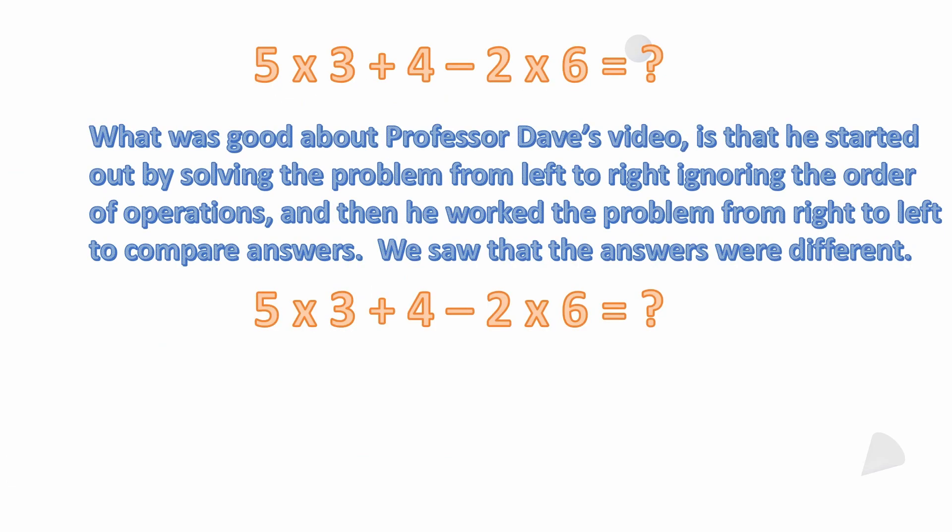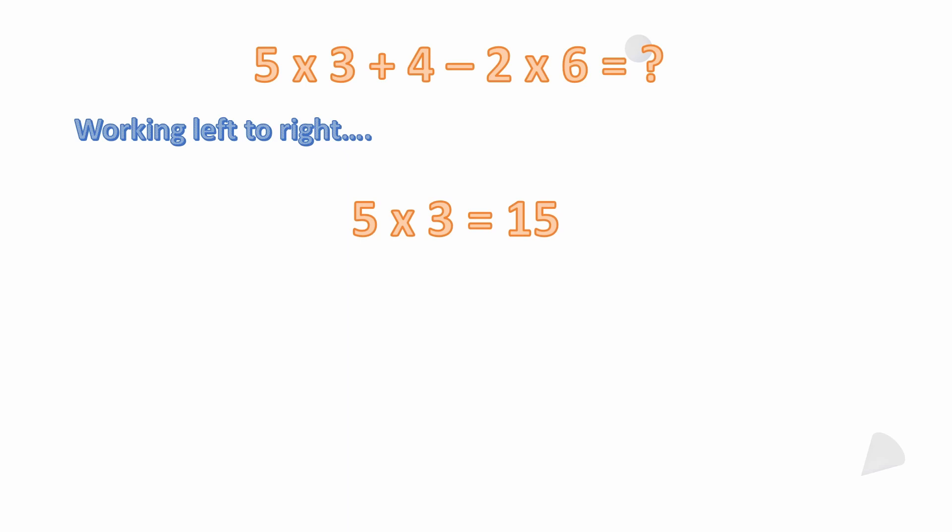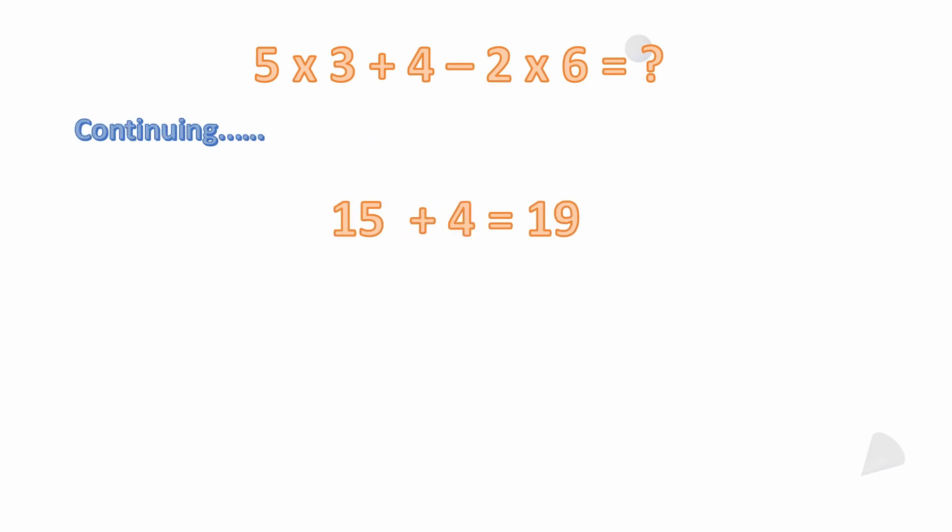What I really liked about the video is that Professor Dave started out by solving the problem from left to right, ignoring the order of operations. Then he tried to work the problem from right to left to compare the answers — and the answers were different. Going left to right: five times three equals fifteen, then fifteen plus four equals nineteen.